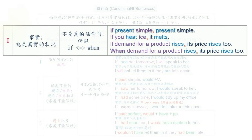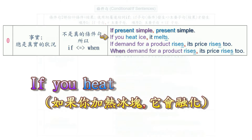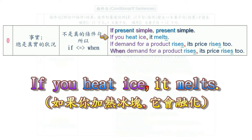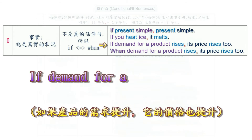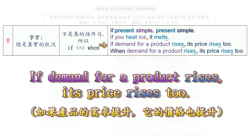Let's start with the zero conditional. The concept of the zero conditional is to express a fact — something that is always true. For example: 'If you heat ice, it melts.' Another example: 'If demand for a product rises, its price rises too.'